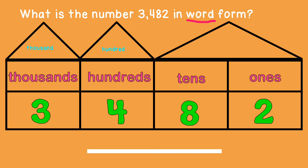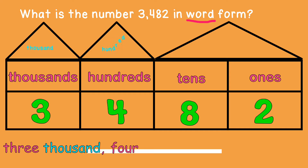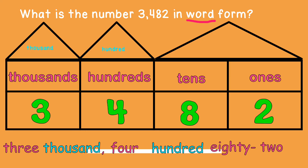To write the number in word form, start with the first number 3, followed by thousand because it is in the thousands place. Afterwards, add a comma. Then write the number 4, followed by the word hundred because it is in the hundreds place. Then write the next two numbers, 82. So the word form is 3,482.